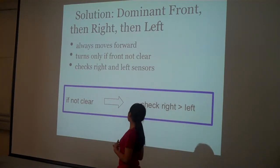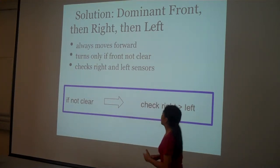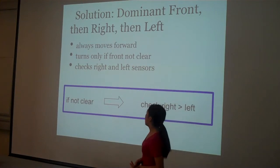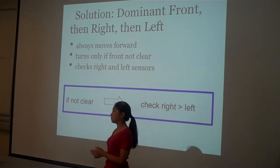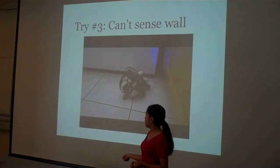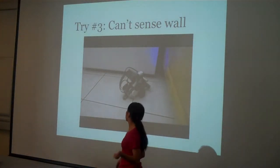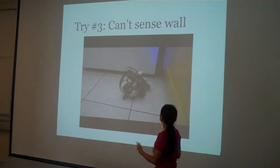And so I changed this by saying it would always go forward. And it would only turn if it wasn't clear in the front. And if it wasn't clear in the front, it would look at the right sensor. And if the right sensor wasn't clear, then it would look on the left sensor. And then I tried again.